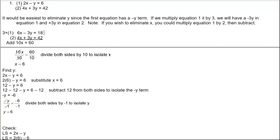The very first one: the first equation is 2x minus y equals 6, the second one is 4x plus 3y equals 42. You always have two options here — you can eliminate x, you can eliminate y, or whatever the two variables are.